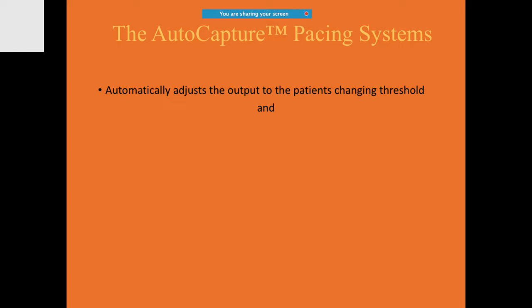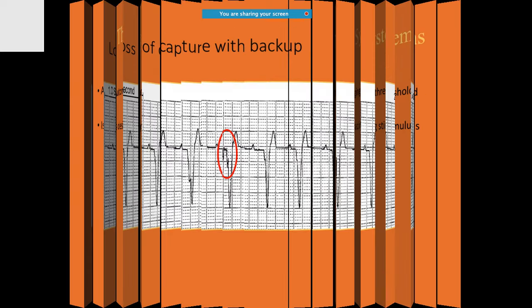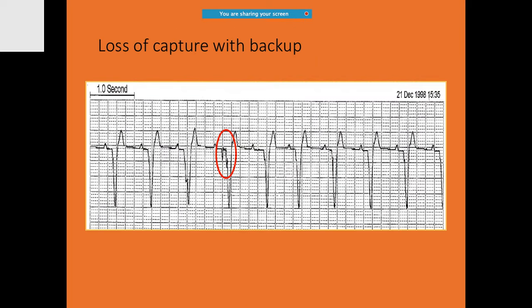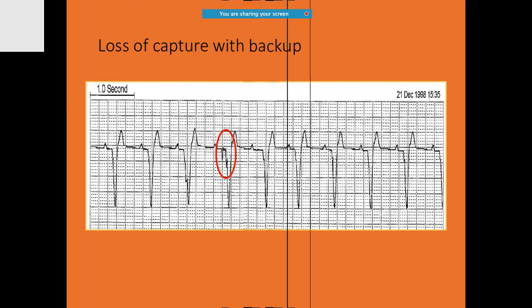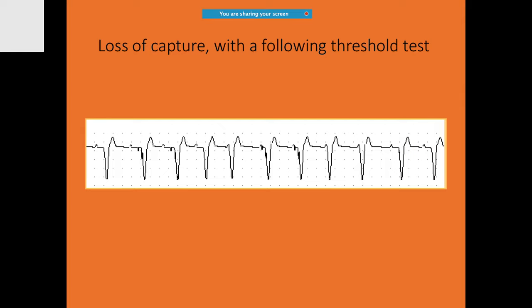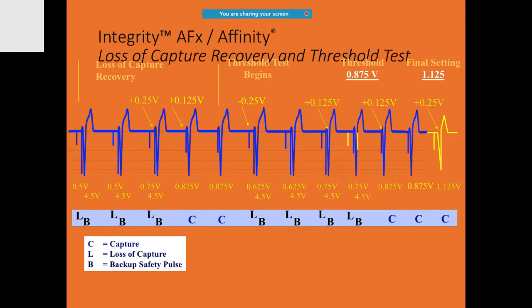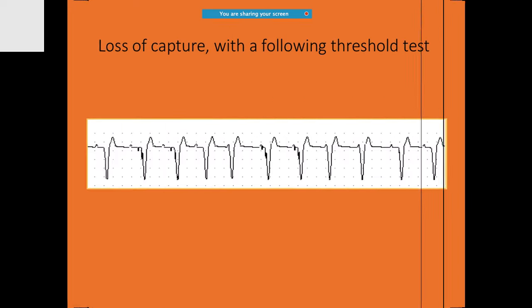Auto-capture is a feature that automatically adjusts the pacemaker output. On this ECG you can see loss of capture, and also a backup safety pulse coming into play. In the tracing you can identify capture, loss of capture, and the backup safety pulse.